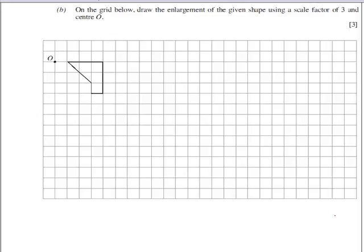Question 9b: we have to enlarge the shape with a scale factor of 3 and center O. From O to the first corner we can see we just go one unit along, so if we multiply that by a factor of 3, we'd have gone three units along, so that corner is now there.